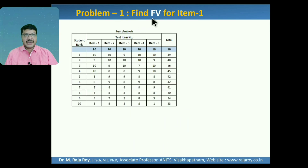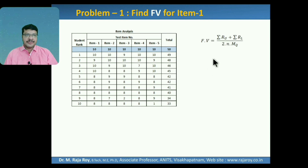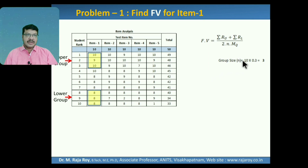First problem: find the facilitation value for item 1. This question paper contains 5 questions. These are the marks obtained by 10 students, sorted in descending order from top scorer to least scorer. Facilitation value is equal to Sigma RU plus Sigma RL divided by 2N into MQ. We have to find the group size: 30% of total class strength of 10 is 3. So top 3 scorers belong to the upper group and bottom 3 scorers belong to the lower group.